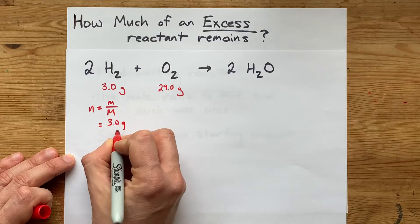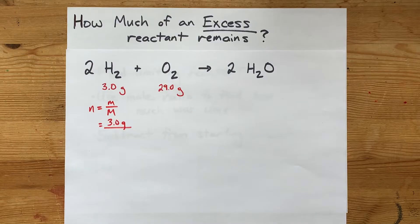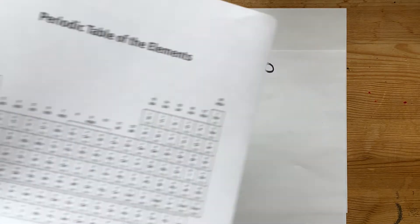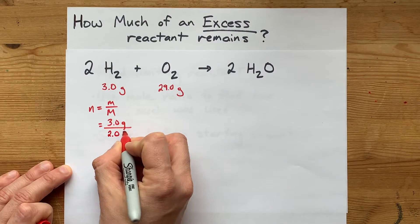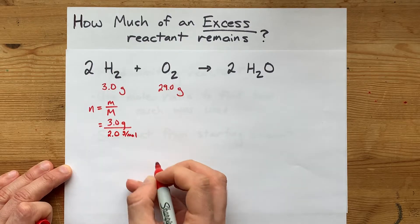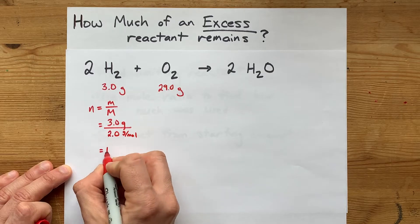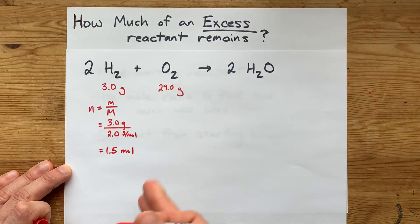In this case, it's three grams divided by, now the molar mass of H2 is two times the atomic mass of hydrogen, which my periodic table says is one. So each of those molecules is two grams per mole. Three divided by two gives me 1.5 moles of hydrogen.